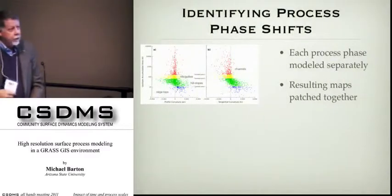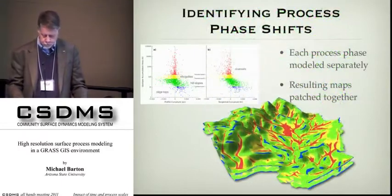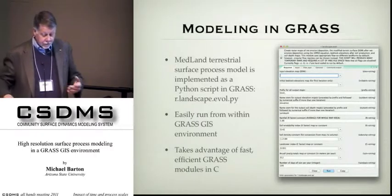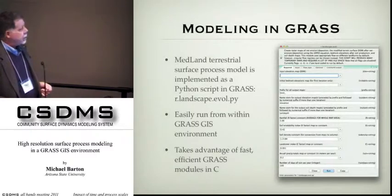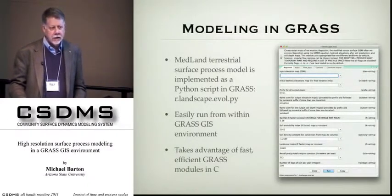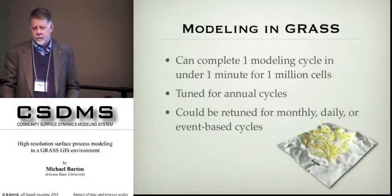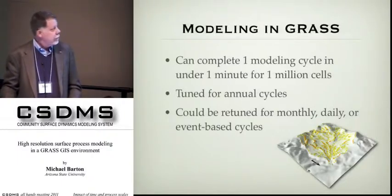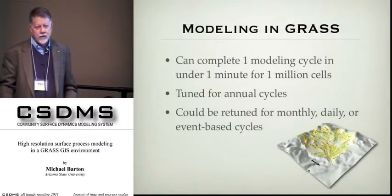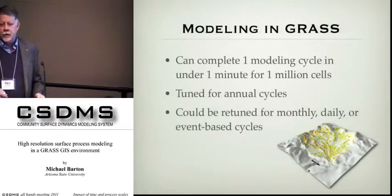Because this is all modeled in GRASS, it's easy to use — it's a Python script that runs in this environment. It takes advantage of GRASS's fast C-based modules and processing, so it goes very fast. Our benchmark is a million cells because we model at high resolutions like five-by-five meter cells, and we can do an annual cycle of a million cells in around 50 seconds. We have this tuned for annual cycles but you could retune it for monthly, daily, or even event-based cycles — and we're talking about doing this on a desktop computer, something you'd go down to Best Buy and get.